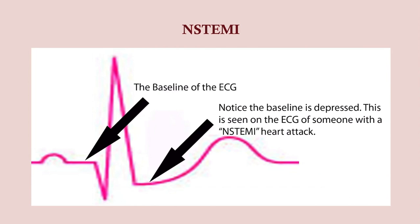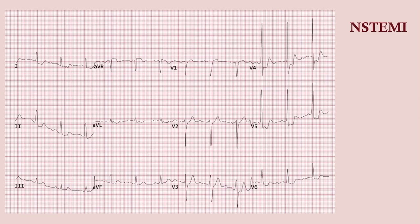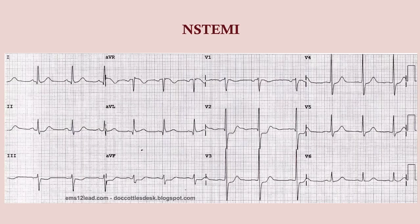In an NSTEMI, rather than ST elevation you'll likely see nothing or ST depression — the ST segment slopes downward a bit and then curves back up. That sloping pattern is typical for NSTEMI, but you won't always see it. What you're really looking for in an NSTEMI is what you're not seeing: you're not seeing ST elevation. On this EKG you can see the ST depression in several leads.